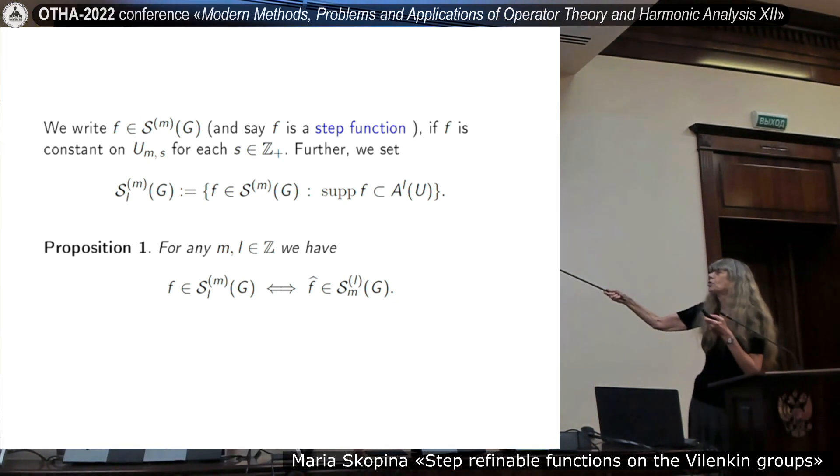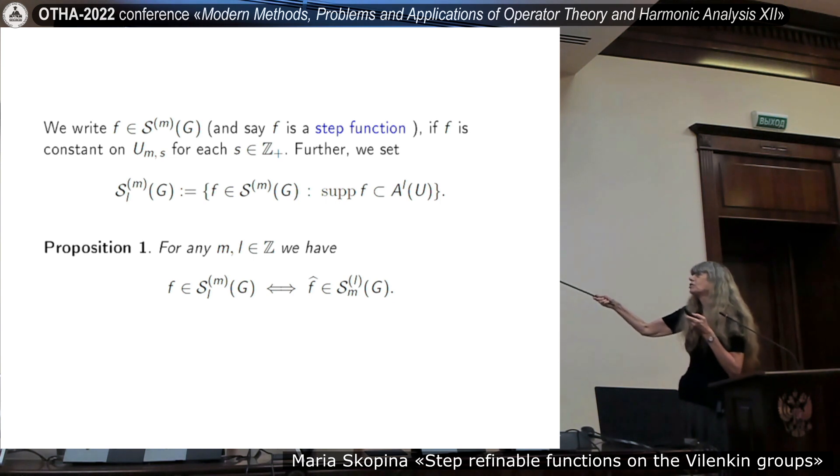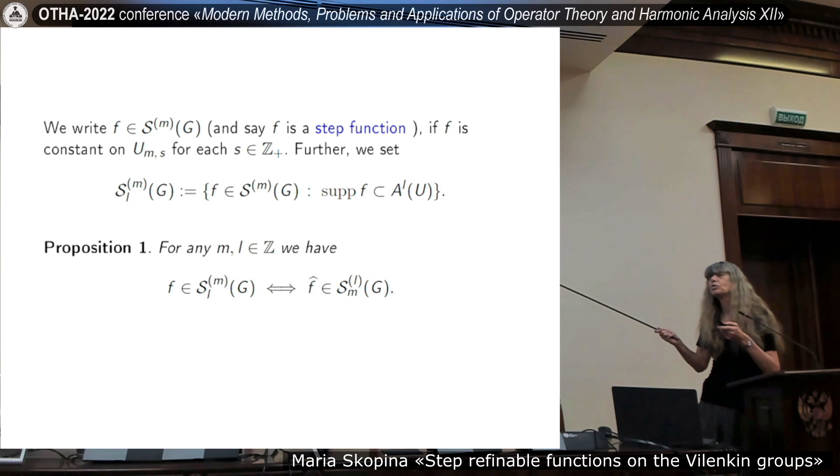We introduce space Sm,j. A function from this step, we will say just step function, and it's possible of order m, to say order m. If f constant on that sets with the size of the step is p to the power minus n. We consider step functions of order m such that are compactly supported and lower index, say which is the size of the support. And very important proposition for any m, l. We have function f belongs to this space if and only if its Fourier transform belongs to change indexes, upper and lower indexes.